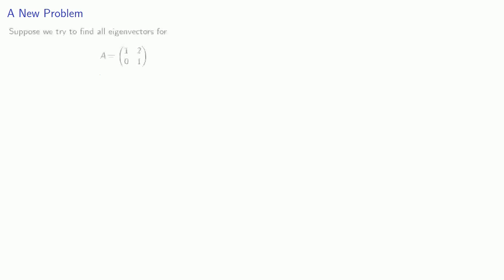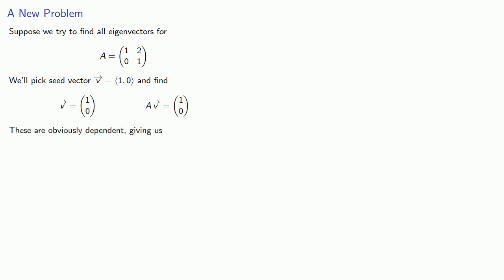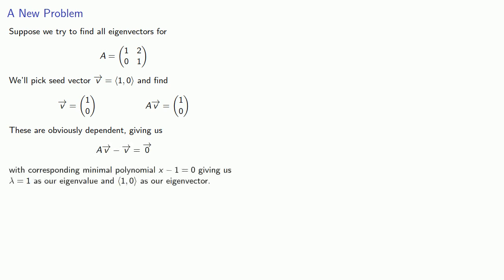Let's consider a new problem. Suppose we try to find all eigenvectors for this matrix. As before, we'll pick some convenient seed vector — say (1, 0) — and find v and Av. These are obviously dependent, giving us the equation Av minus v equals the zero vector, with corresponding minimal polynomial x minus 1 equals 0, giving us lambda equals 1 as our eigenvalue and (1, 0) as our eigenvector.